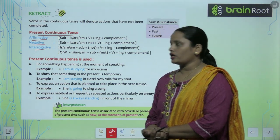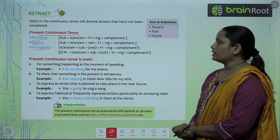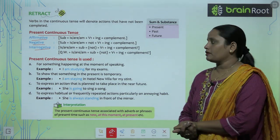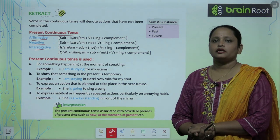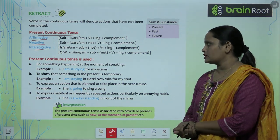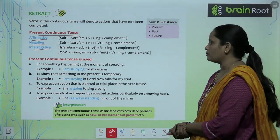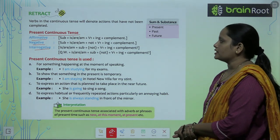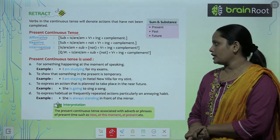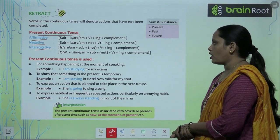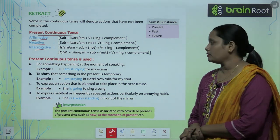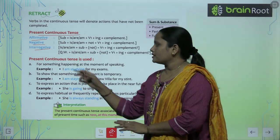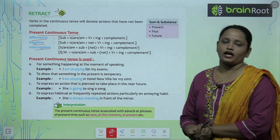For interrogative sentences, the rule is: Is/am/are + subject + not + verb's first form + ing + complement. And for question word sentences: Question word + is/am/are + subject + not + verb's first form + ing + complement.